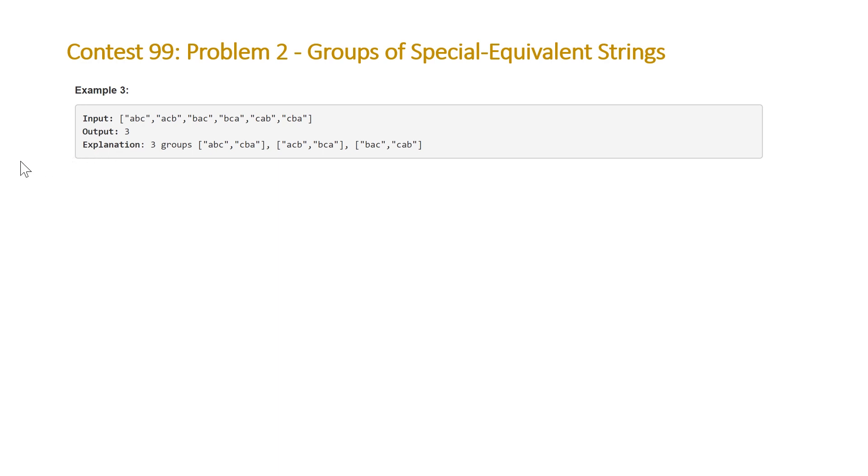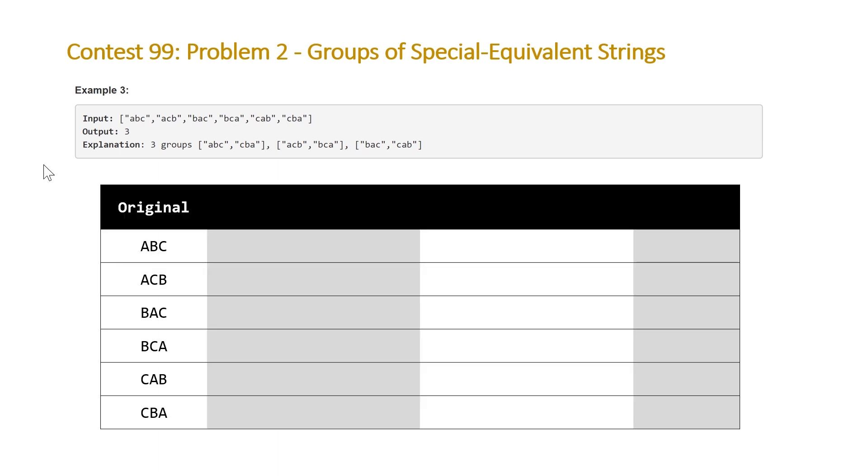So the trick to this problem is to think about your string as really two strings: one that consists of the characters at the even indices and one that consists of the characters at the odd indices. If we construct a table that has each of our six strings here, the first thing we want to do is get those two substrings, so we create two columns here, one for even indices (that's at 0 and 2) and then one for odd indices which is just the middle character.